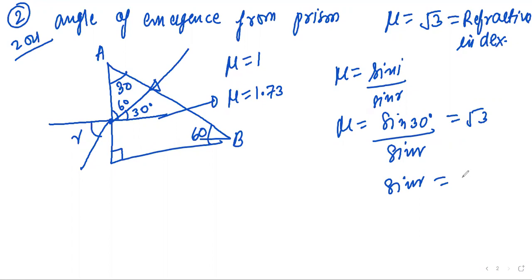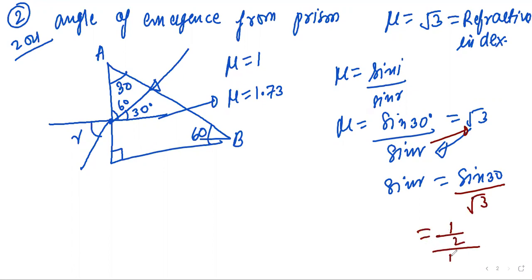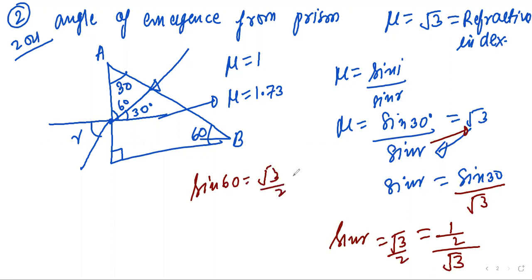Solving: sin r = sin 30° / √3 = (1/2) / √3 = 1/(2√3) = √3/2 ... wait, after correcting: sin r = 1/2 ÷ √3 = √3/2 ... since sin 60° = √3/2, therefore r = 60°.